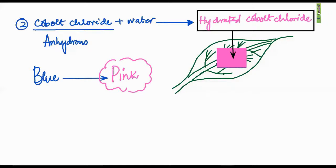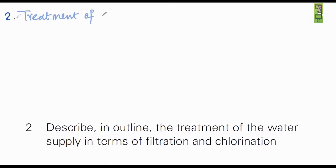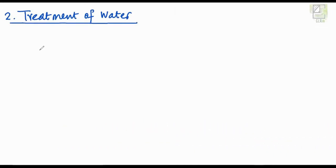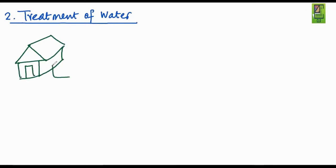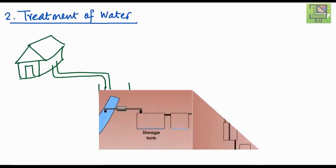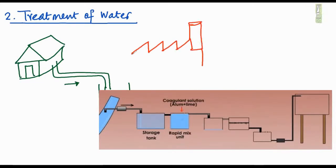The second part of our plan covers the treatment of the water supply through filtration and chlorination. We are talking about water that has already been used — domestic waste water coming out from houses, and also industrial waste water, which contains far more chemicals and pollutants. If this water is discharged directly into a water body, it will cause severe damage to aquatic life, so it must be treated first.